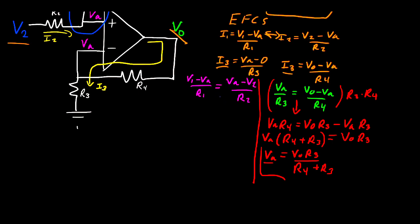Now let's take this value of VA and plug it in over here. But before I plug in my VA definition, I'm going to get rid of these fractions, so that way it's a little bit cleaner. Here I'm going to have R2 V1 minus R2 VA is equal to R1 VA minus R1 V2. Now I'm going to move the VA to one side and factor it out. We'll have R2 V1 plus R1 V2 is equal to R2 plus R1 VA.